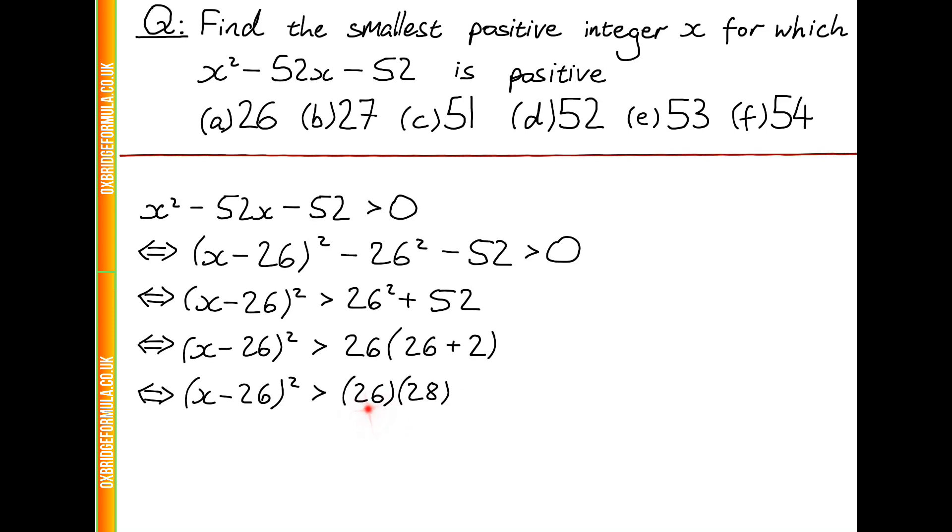Because we can rewrite 26 as 27 minus 1 and 28 as 27 plus 1. And therefore we have something minus something times by something plus something, which from difference of squares tells us this is 27 squared minus 1 squared.